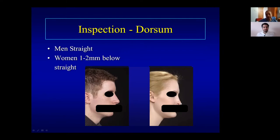Looking at the dorsum from the profile view, in men it should be straight or even slightly high — not low, as that would appear feminine. For women, the dorsum can be one to two millimeters below the straight line, but not more.